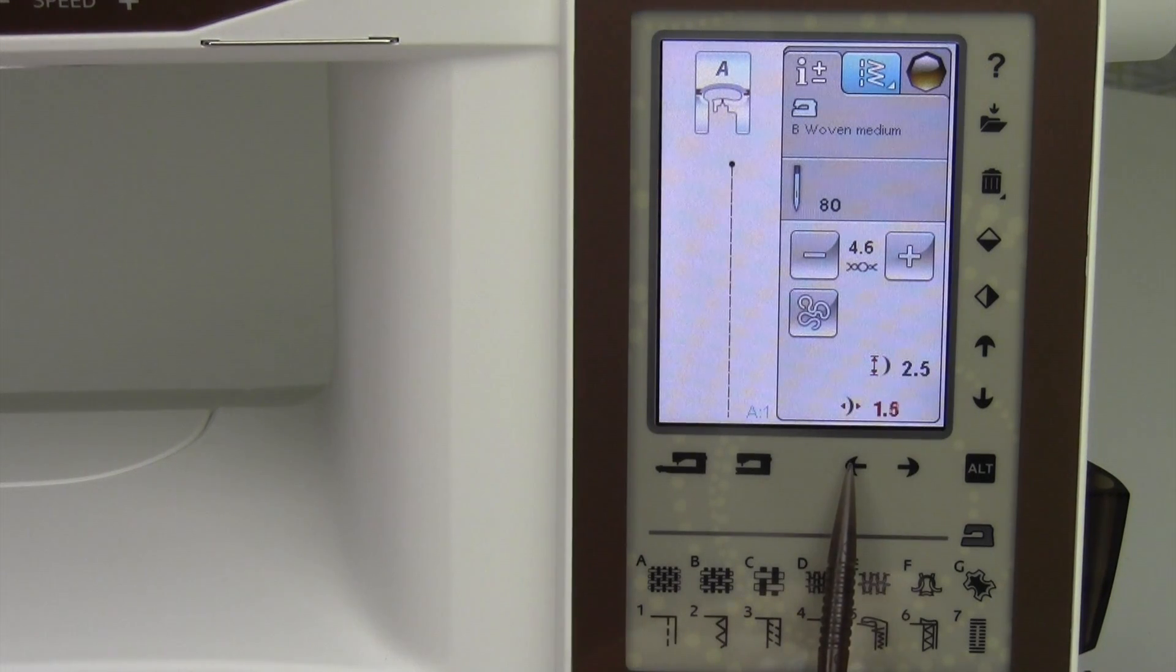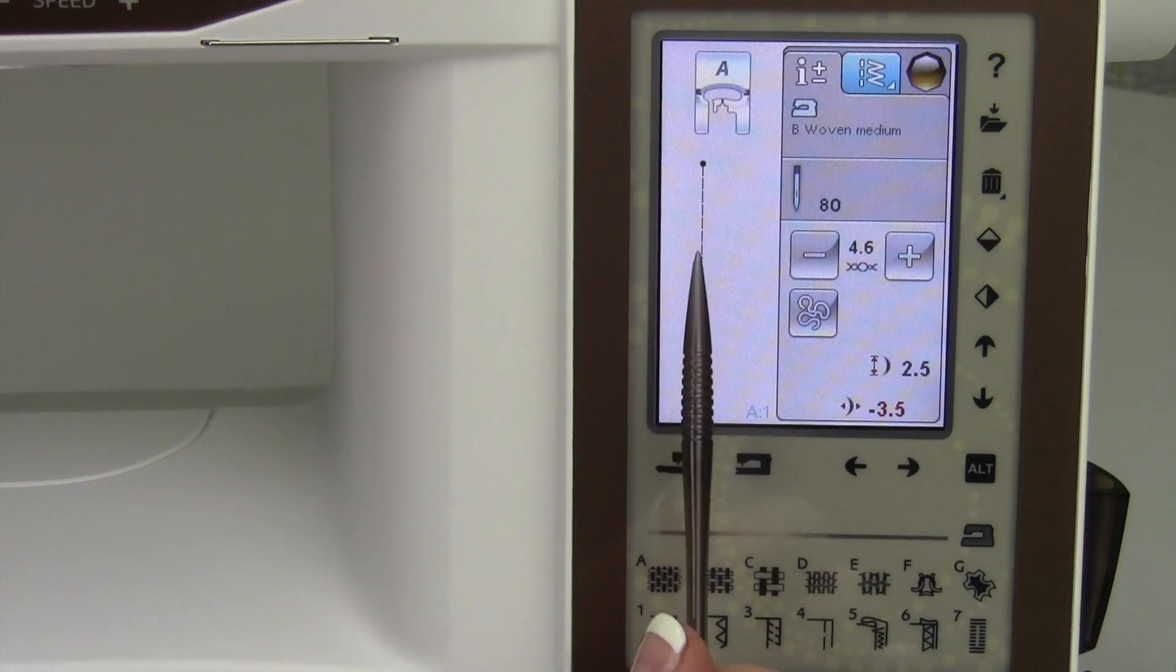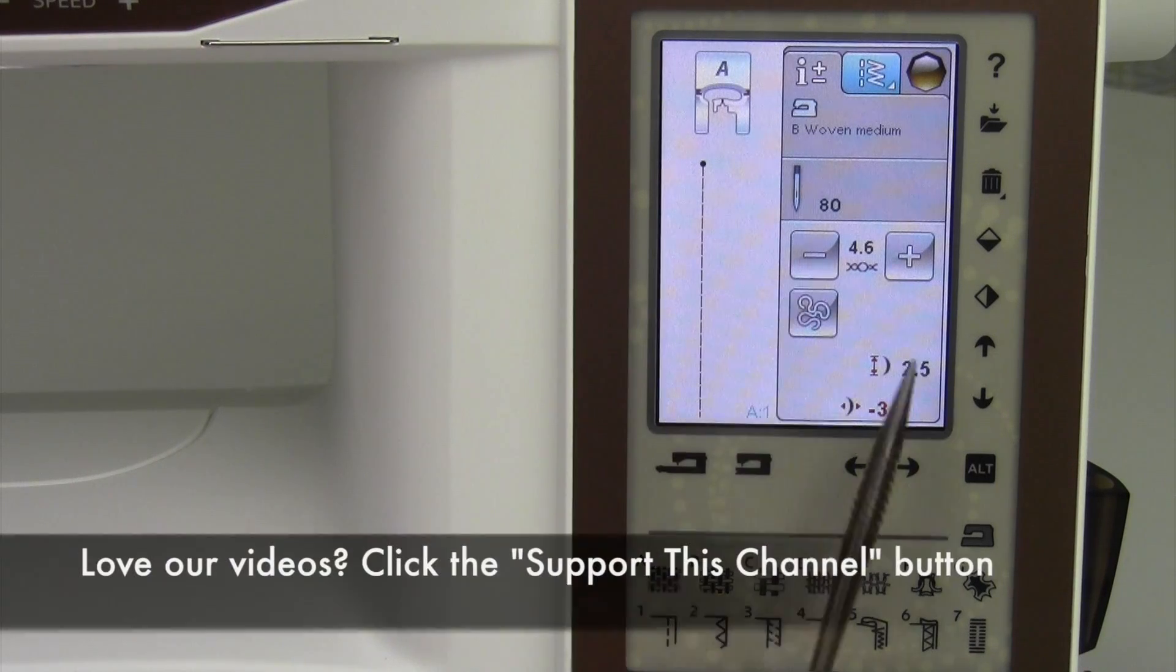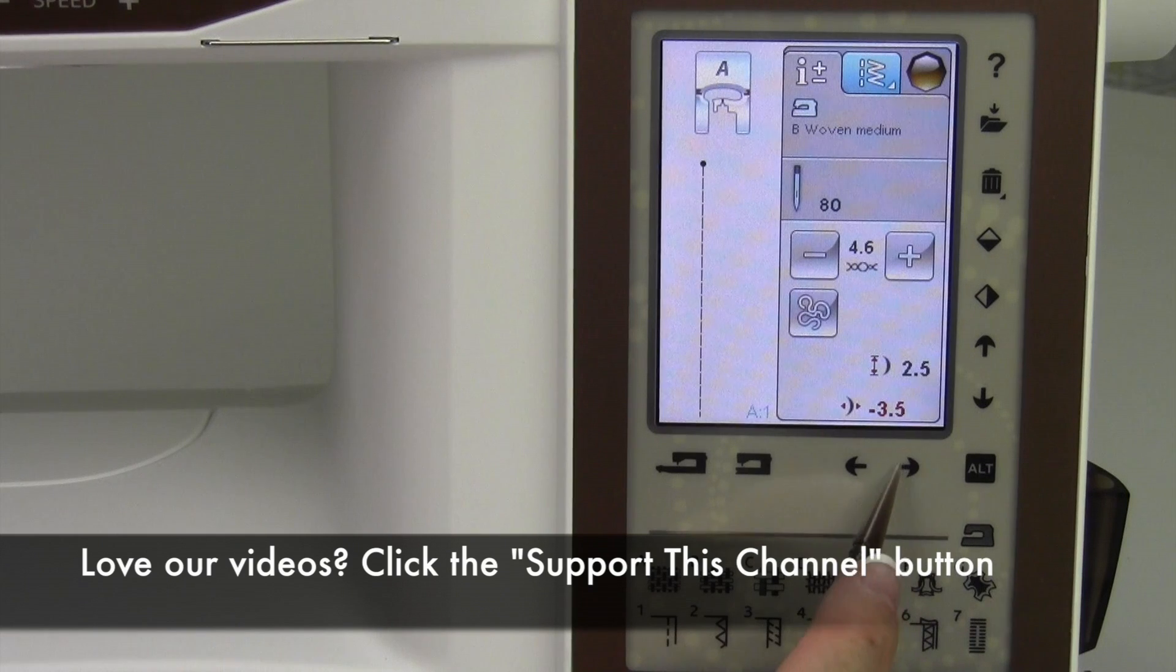And then if we go all the way back, we get back to center, which is 0.0 and black with the number. And then it highlights red, and we go all the way over to minus 3.5. Because this machine has a width of seven millimeters wide—three and a half one way, three and a half the other—that totals seven millimeters.